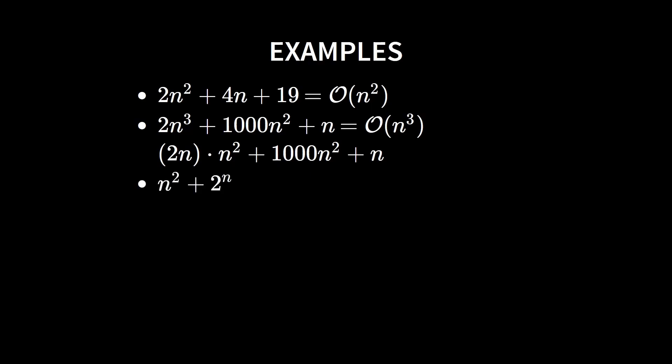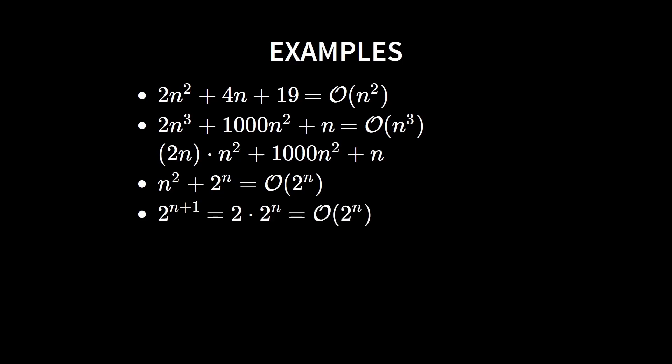Which grows faster — n to the power of 2 or 2 to the power of n? We've just seen that exponential running time, where the n is in the exponent, increases much faster than polynomial running time, where the n is in the base. So 2 to the power of n is the right answer. Let's say the running time is 2 to the n plus 1 — this is nothing but 2 times 2 to the n. 2 is a constant factor, so the running time is big O of 2 to the n.